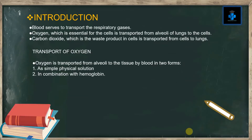Introduction: blood serves to transport the respiratory gases. Oxygen, which is essential for the cells, is transported from the alveoli of the lungs to the cells. Carbon dioxide, the waste product of cells, is transported from cells to the lungs. Oxygen is transported from alveoli to the tissues by blood in two forms: number one, as a simple physical solution; number two, in combination with hemoglobin.